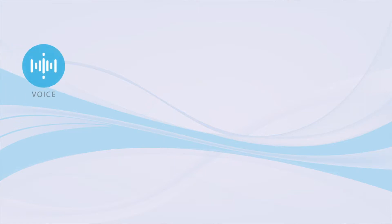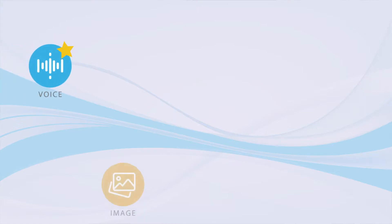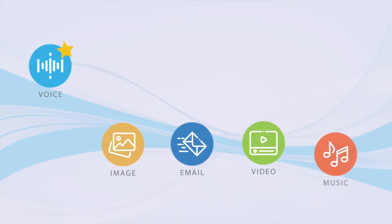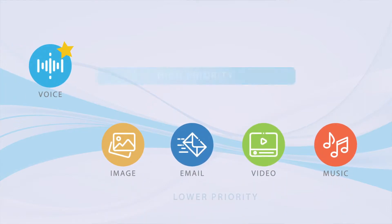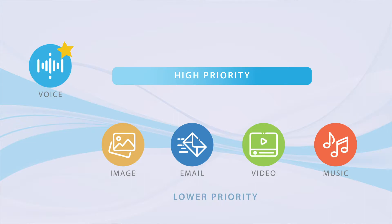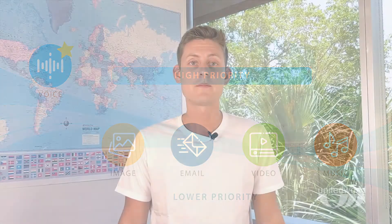QoS balances out how much bandwidth is needed for certain types of traffic or devices, then prioritizes and spreads out the available bandwidth across devices and applications. In this way, it ensures that your important traffic gets through hassle-free.